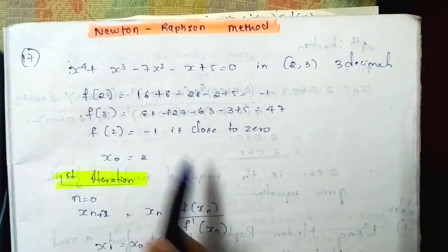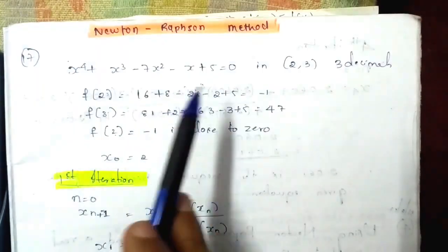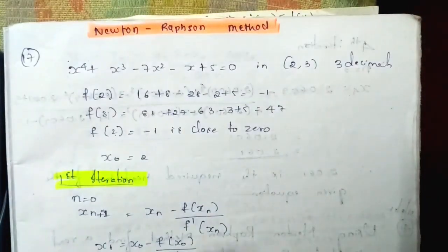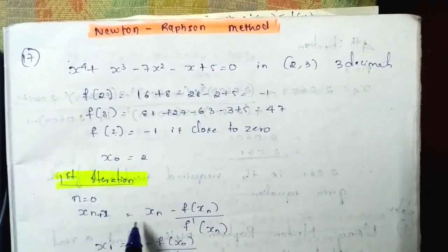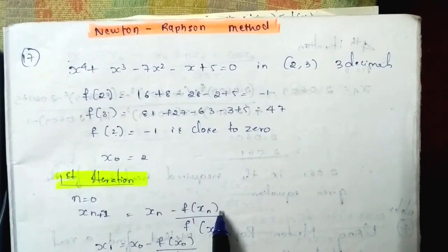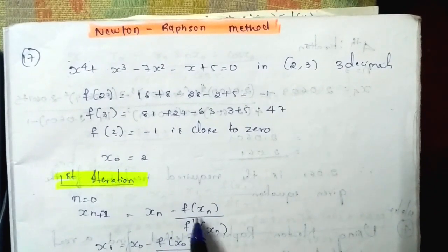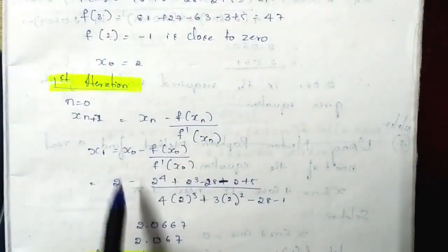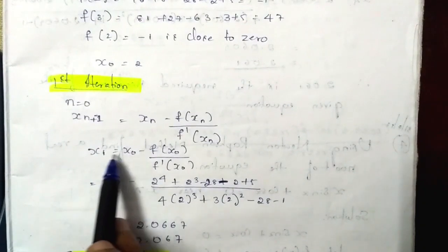For the first iteration, x₁ equals xₙ minus f(xₙ) divided by f'(xₙ).